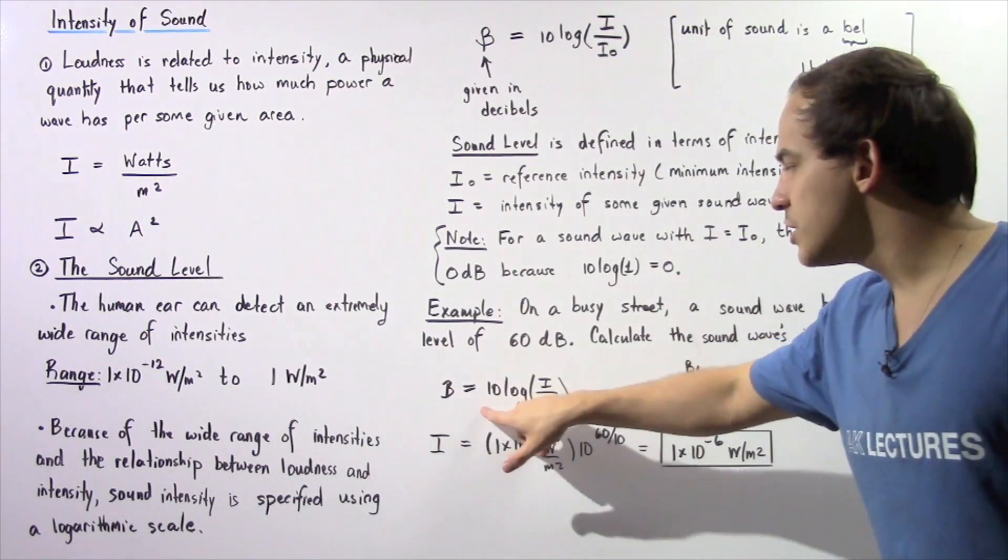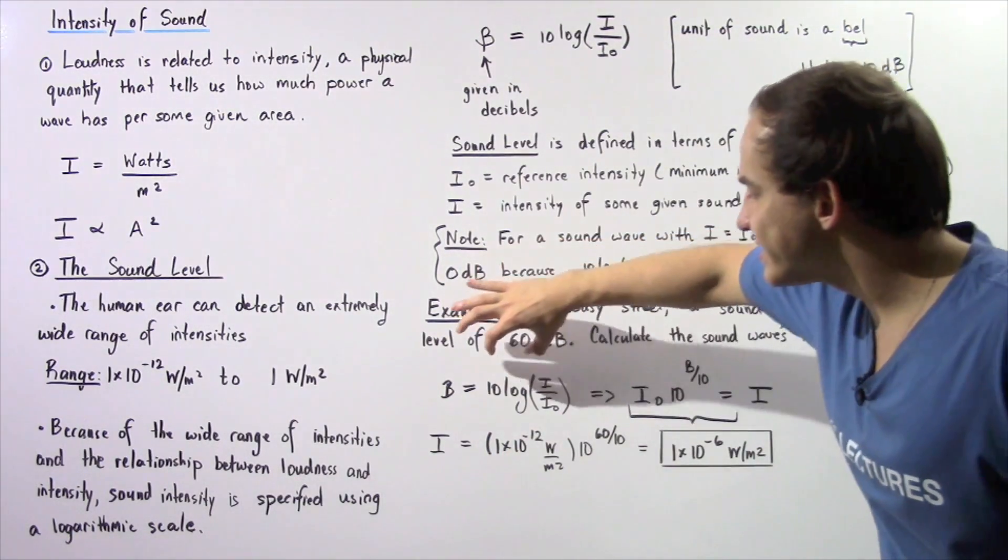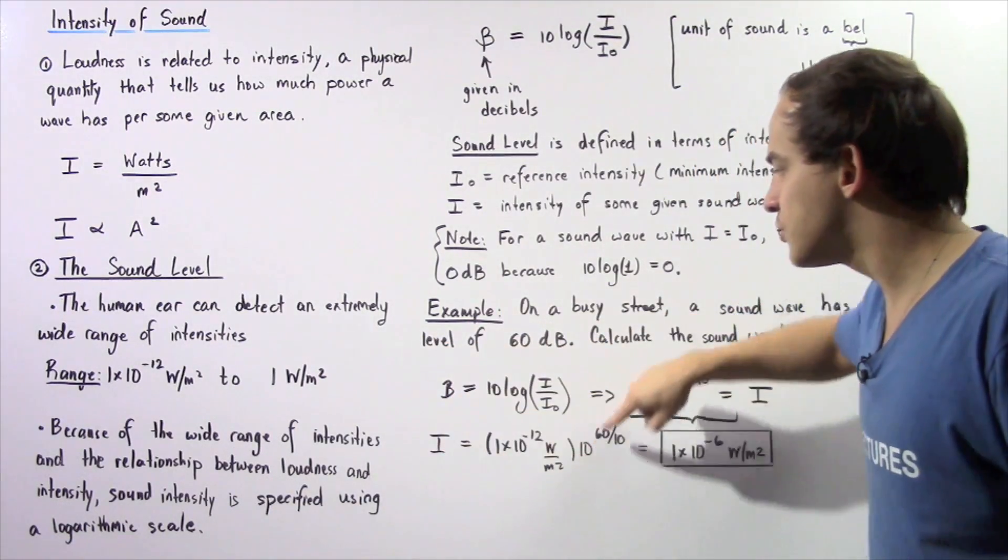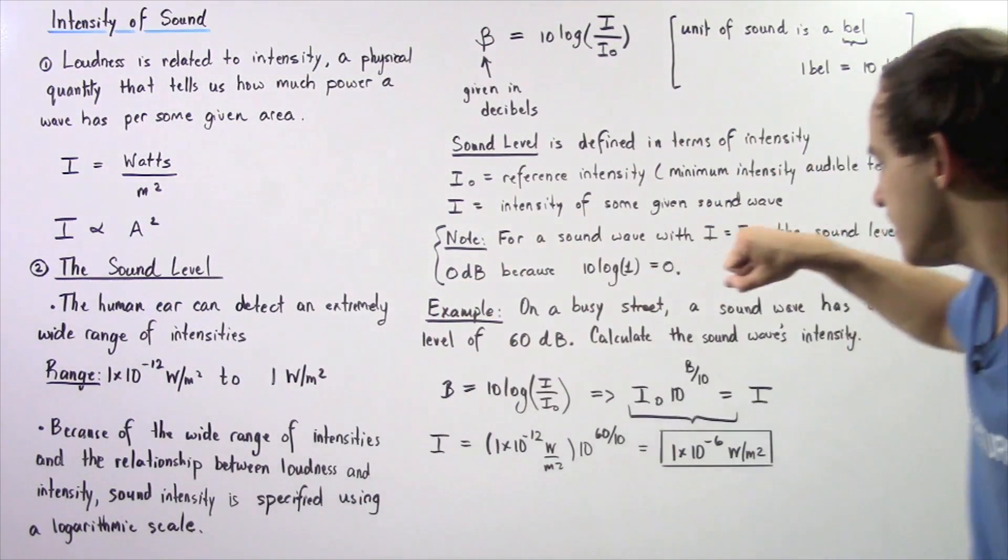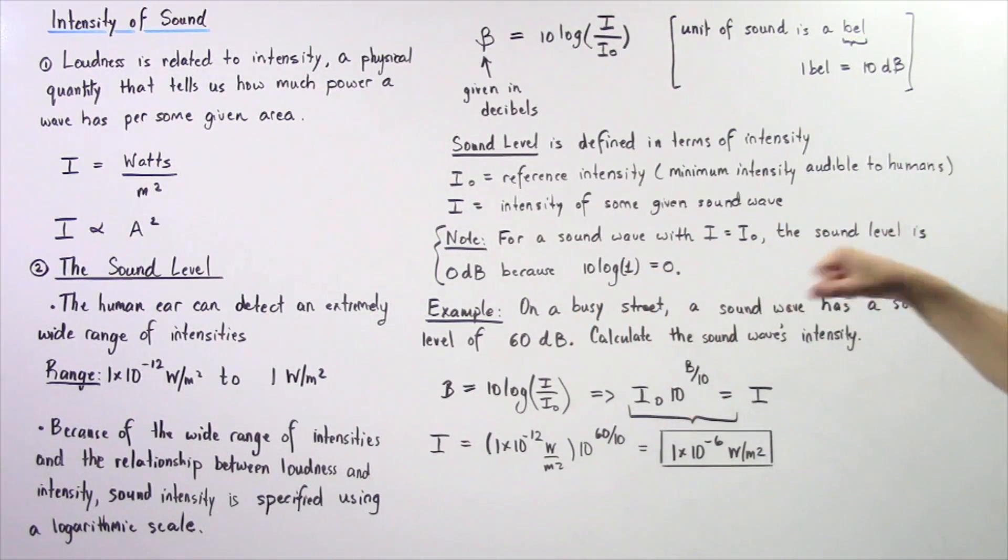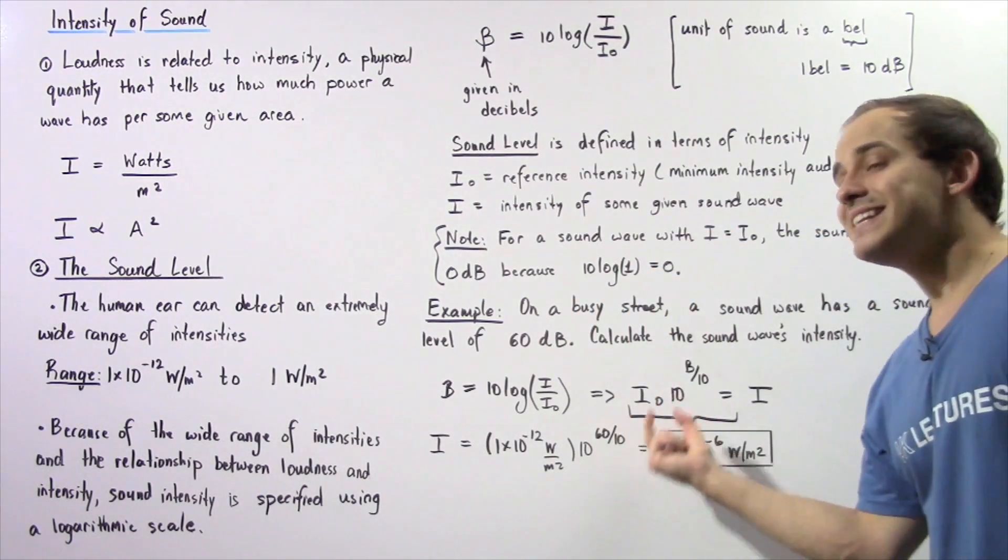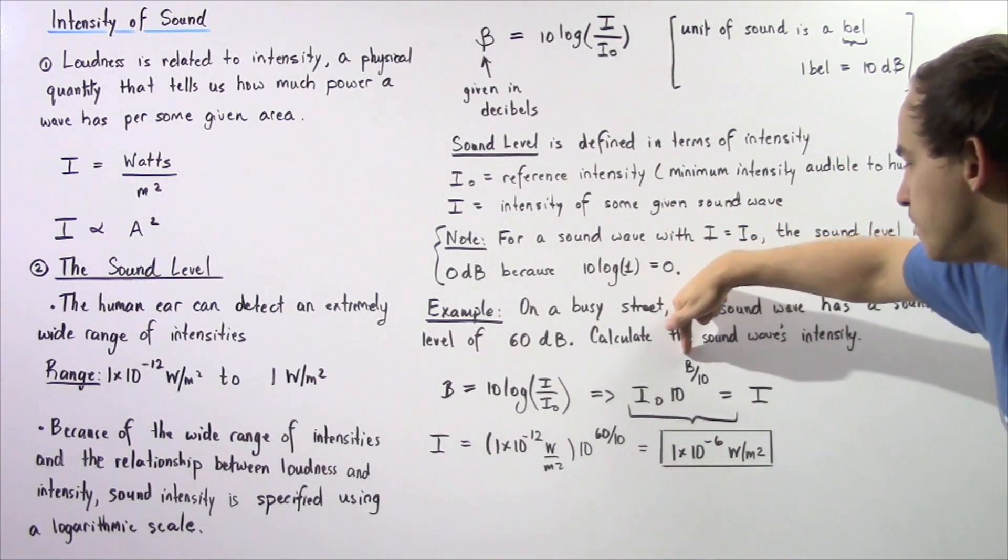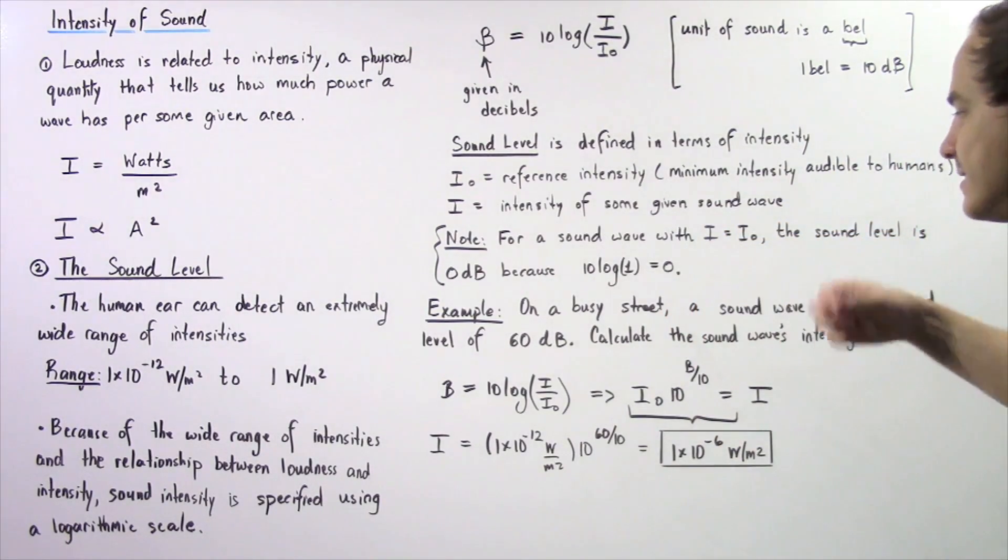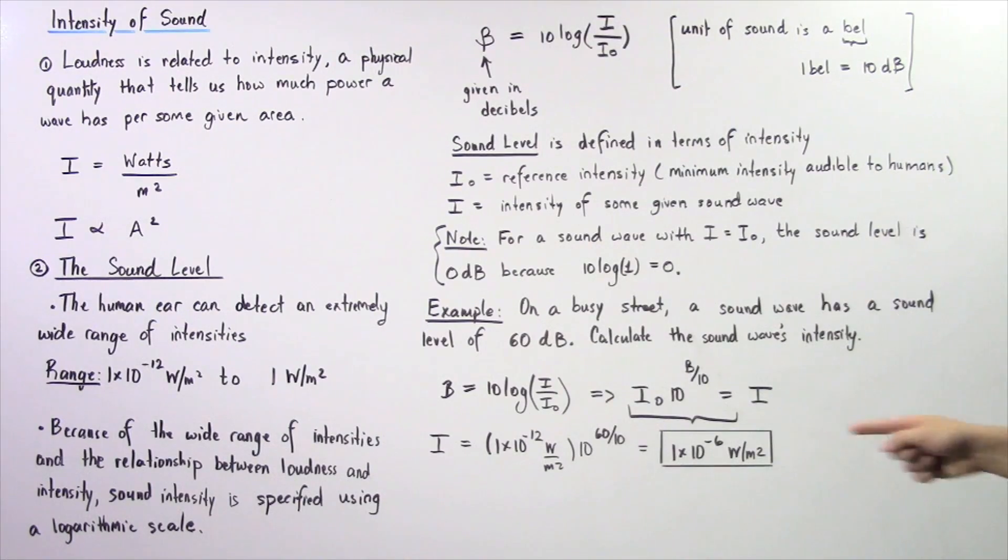We want to use this equation and rearrange it to solve for I. If we solve for I, we get the following result: I₀ multiplied by 10 to the power of B divided by 10, where B is simply our sound level. This product is equal to I.